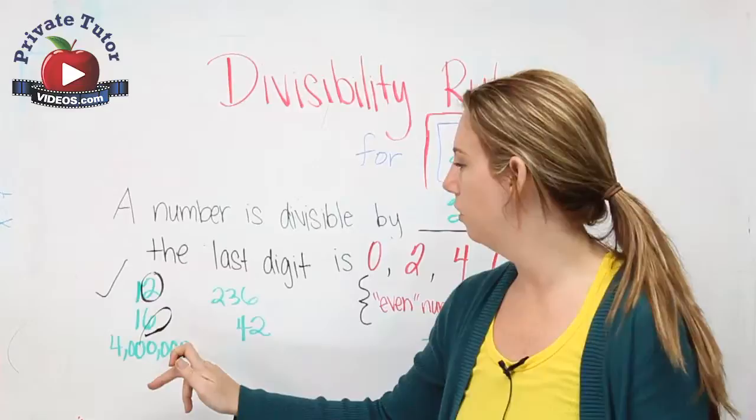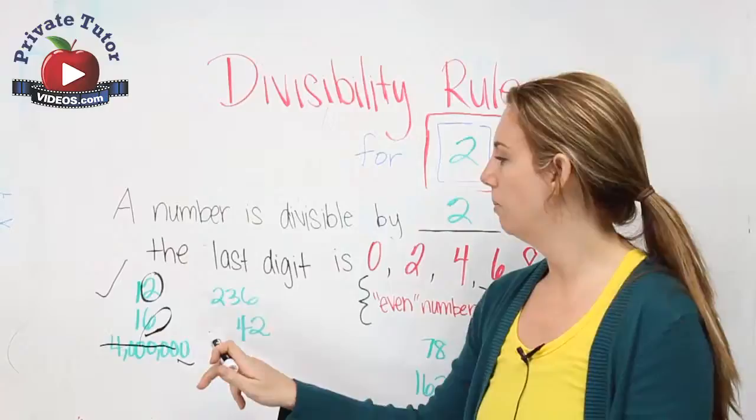Even things like 4 million. Pay no attention to the big numbers. Just look at the last one. 0. Yep, that's on our checklist. Divisible by 2.